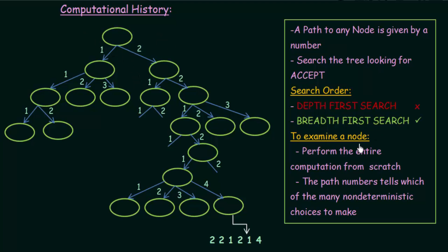To examine a node, we perform the entire computation from scratch, and the path numbers tell us which of the many non-deterministic choices to make. Every node has a path number, and that path number tells us which choice to make at each step.